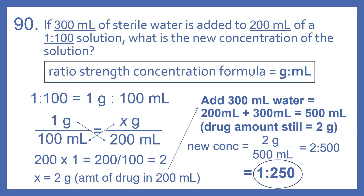There's 1 gram per 100 milliliters equal to X grams per 200 milliliters. We cross multiply and then divide. 200 times 1 divided by 100 equals 2. So there are 2 grams of drug in 200 milliliters. Now if we add 300 milliliters of water, 200 plus 300 is 500 milliliters.